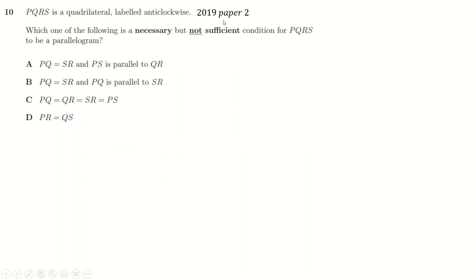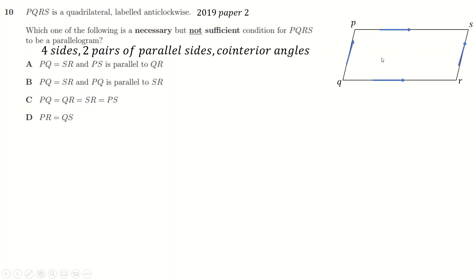This is from 2019. All the exam references will be up here. So we've got a quadrilateral. Which of the following is necessary but not sufficient to be a parallelogram? Let's focus on being a parallelogram. We all probably have this picture in our heads. The definition is two pairs of parallel sides. You've got co-interior angles because of the parallel sides. You've got four sides obviously — sometimes they test you on that kind of really easy stuff.